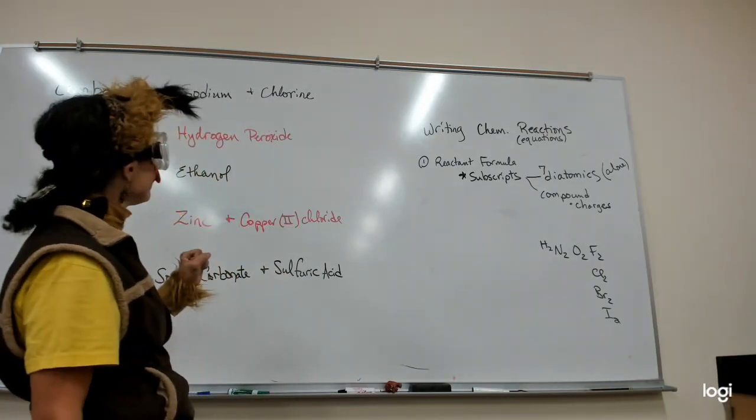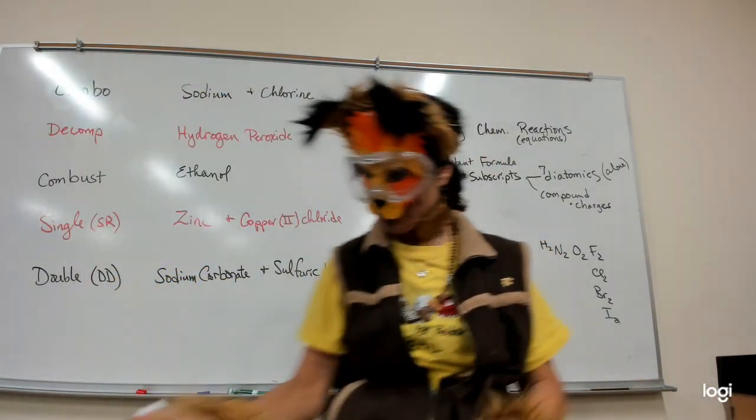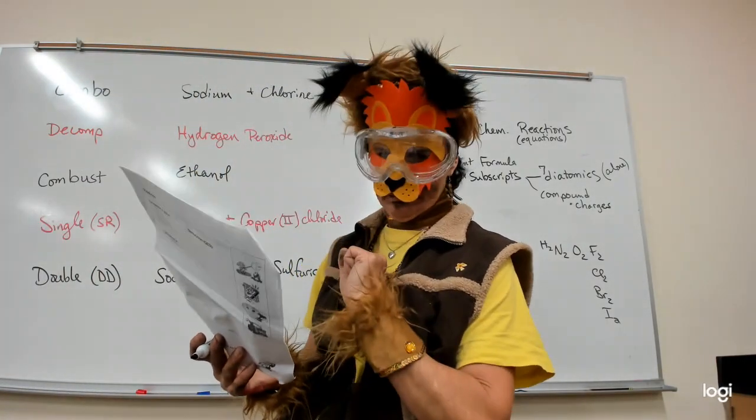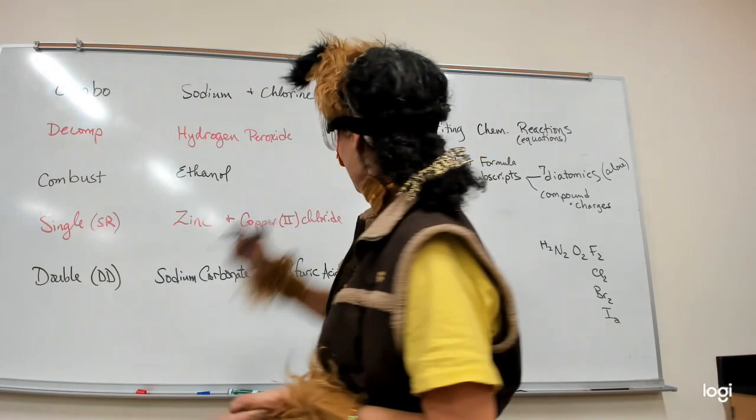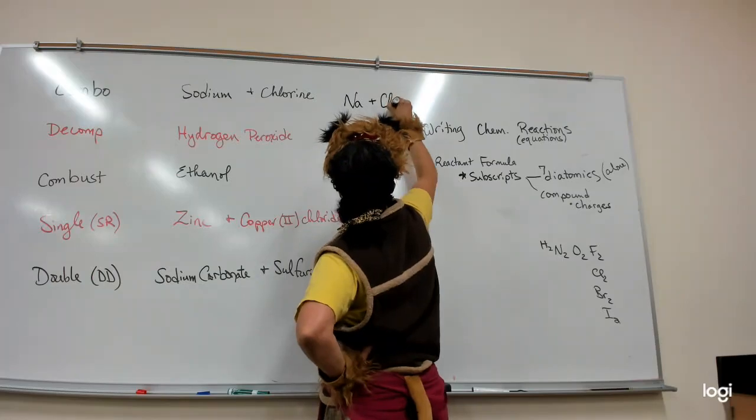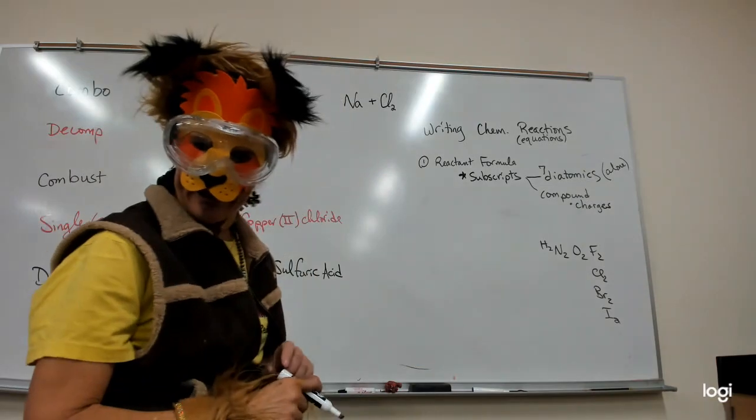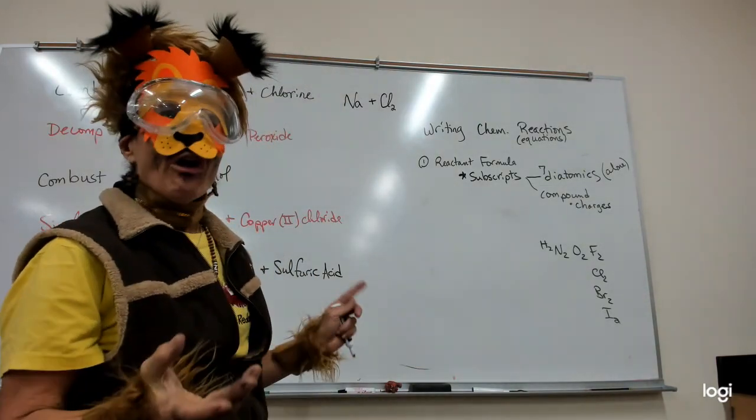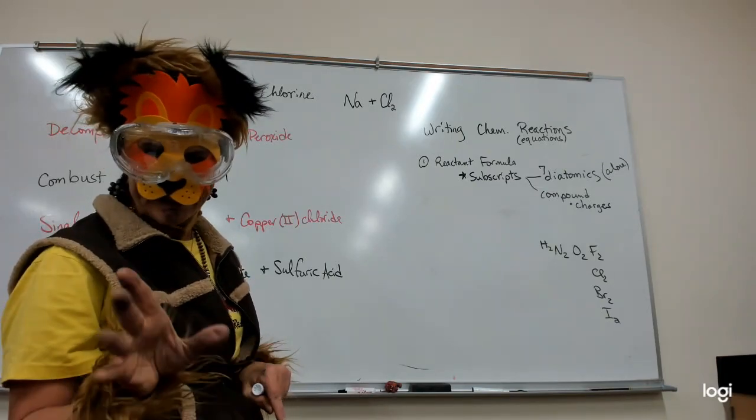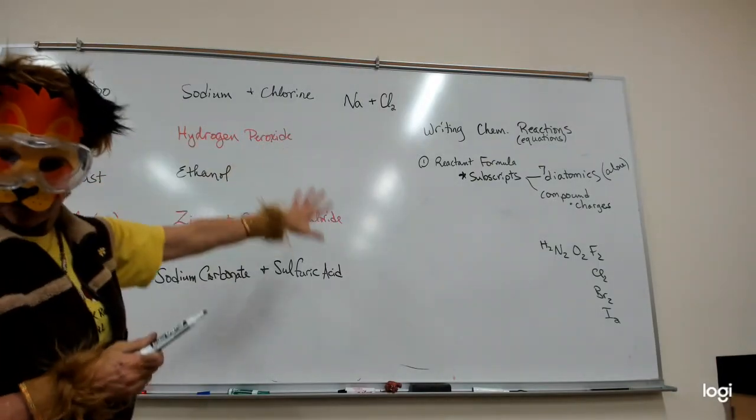So for our first example, sodium and chlorine. There's lots of extra words. You just have to find the key part. Sodium, chlorine. Underline them, and then we just write the formula. So sodium, and means plus, and then we write chlorine, diatomic. Notice the diatomics are the nonmetals.